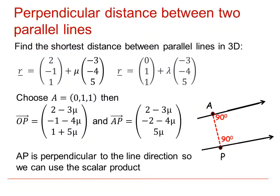Now we know the position of point A on the second line. We can find the position of P as a general point on the first line, and therefore we can find the displacement vector from A to the general point P.